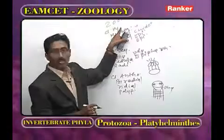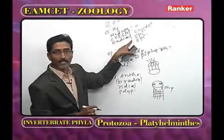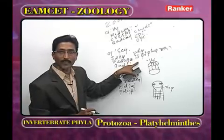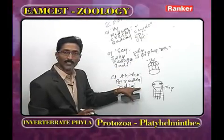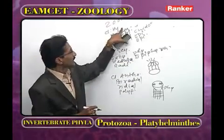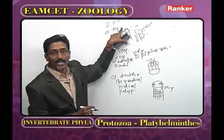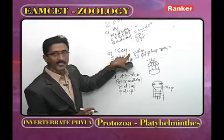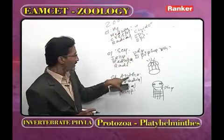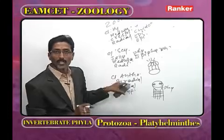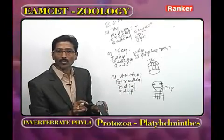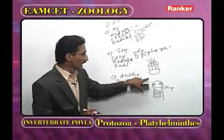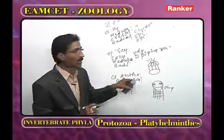In Hydrozoa, germ cells are derived from epidermis. In Scyphozoa and Anthozoa, germ cells are derived from endodermis. Hydra is commonly known as freshwater polyp. Scyphozoa common name is jellyfishes. Anthozoa includes sea anemones and corals.